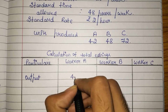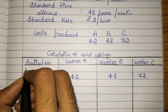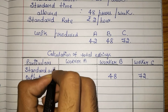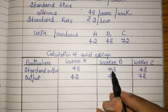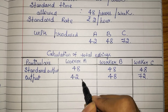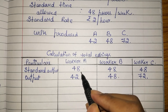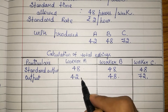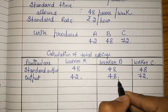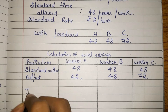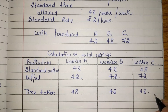Worker A has produced 42 units, B has produced 48 units, and C has produced 72 units. The standard time allowed was 48 hours, so all three workers have taken 48 hours of working time.